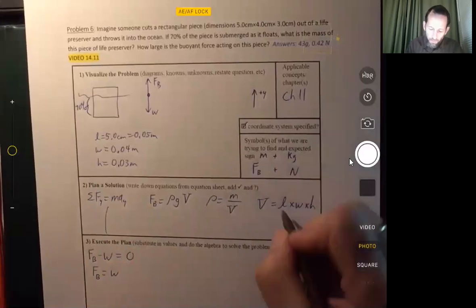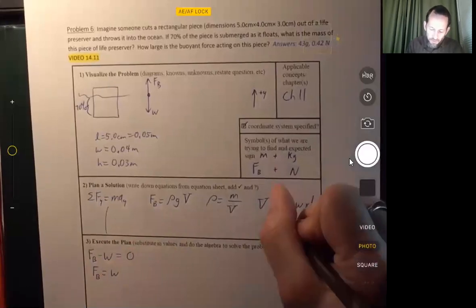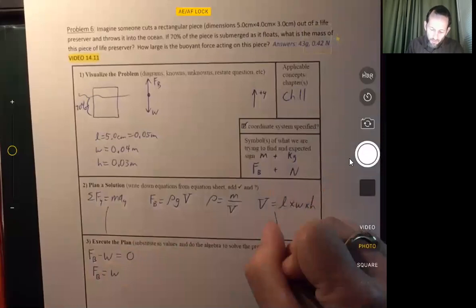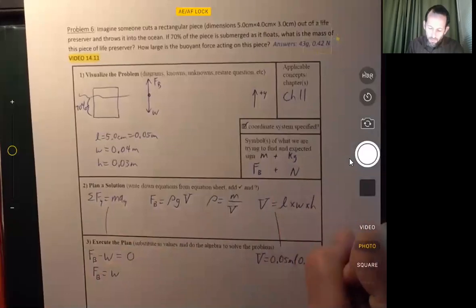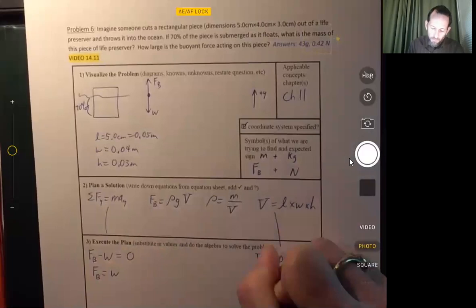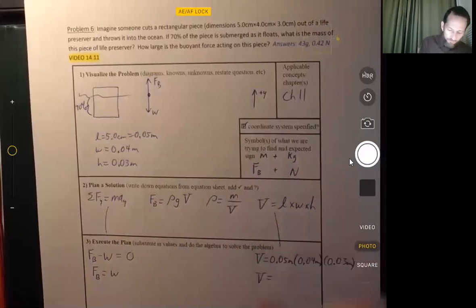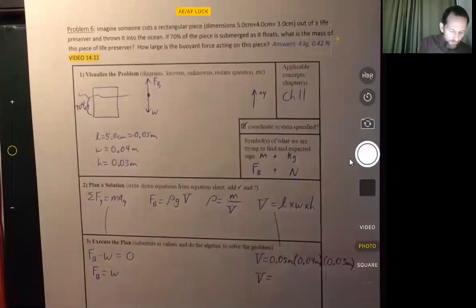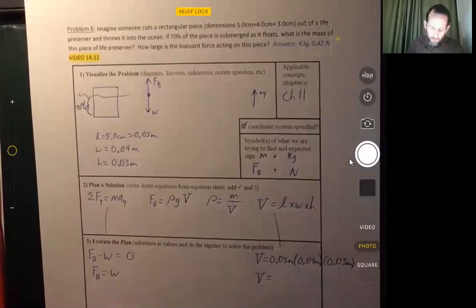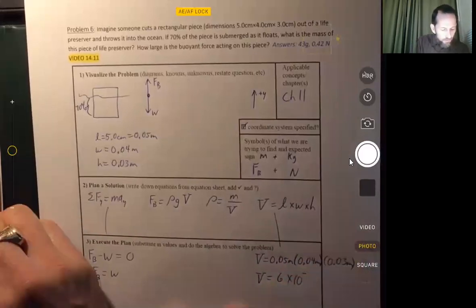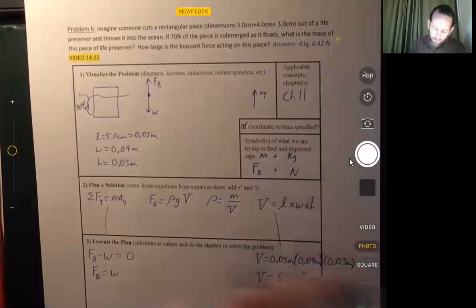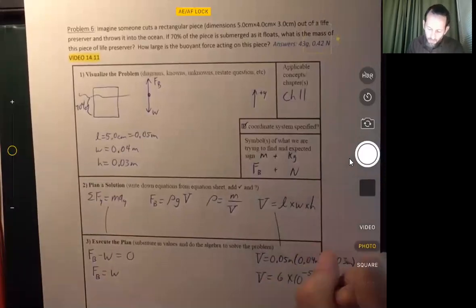We also know the volume equation here. That's just 0.05 meters times 0.04 meters times 0.03 meters. So the volume, we can get that right away. 0.05 times 0.04 times 0.03, and we get 6 times 10 to the negative 5 cubic meters.